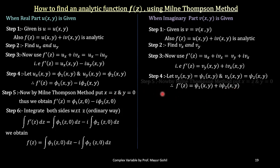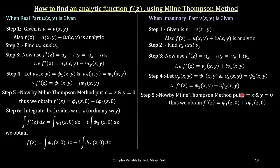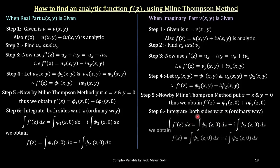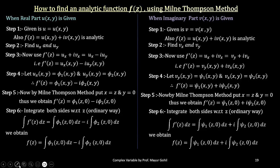Again, the Millen-Thompson method enables us to put x equals to z and y equals to 0. So we obtain f'(z) equals psi₁(z, 0) plus i times psi₂(z, 0). Again we integrate on both sides in an ordinary way with respect to z and we will get the final answer.